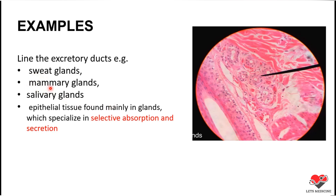Stratified cuboidal epithelium is found in sweat glands, mammary glands, and salivary glands, where it lines the excretory ducts. All three of these glands share the function of selective absorption and secretion. Therefore, stratified cuboidal epithelium is responsible for the selective absorption and secretion of electrolytes in these glands.